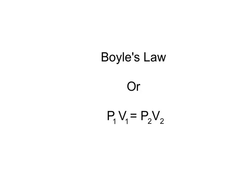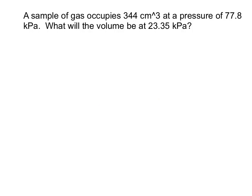P1 times V1 equals P2 times V2. So this problem here says a sample of gas occupies 344 centimeters cubed at a pressure of 77.8 kilopascals. What will the volume be at 23.35 kilopascals?